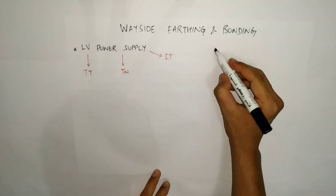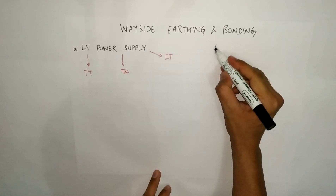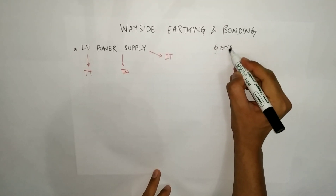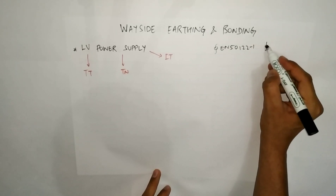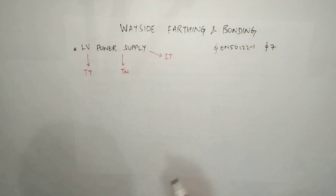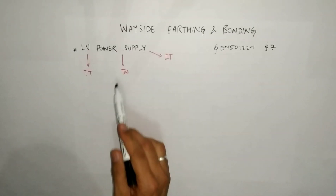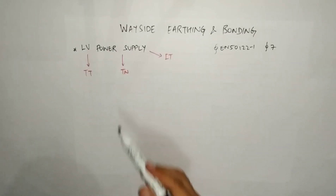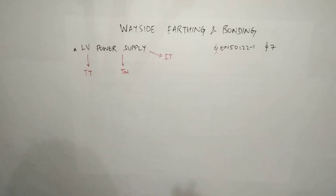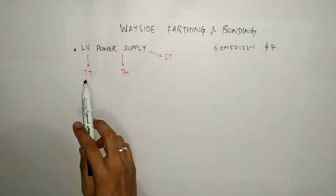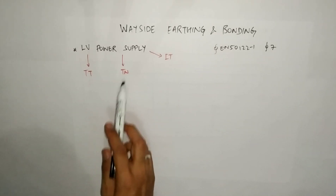As per EN 50122-1 clause 7, there are two types of arrangements. The first one is TT and the second one is TN. Apart from that there is one more connection used in railway, which is IT, used mainly by signalling for point machines and other purposes. But our main focus for this lecture will be TT and TN.